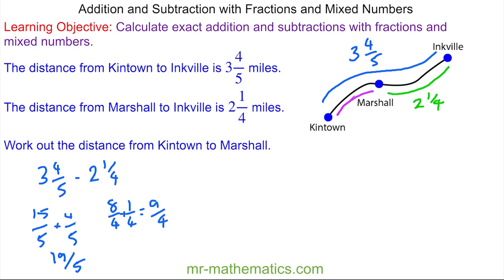So now I'm working out nineteen-fifths take away nine-quarters. I'm going to use the common denominator of twenty. So I'll multiply this fraction by four. Nineteen times four is seventy-six.